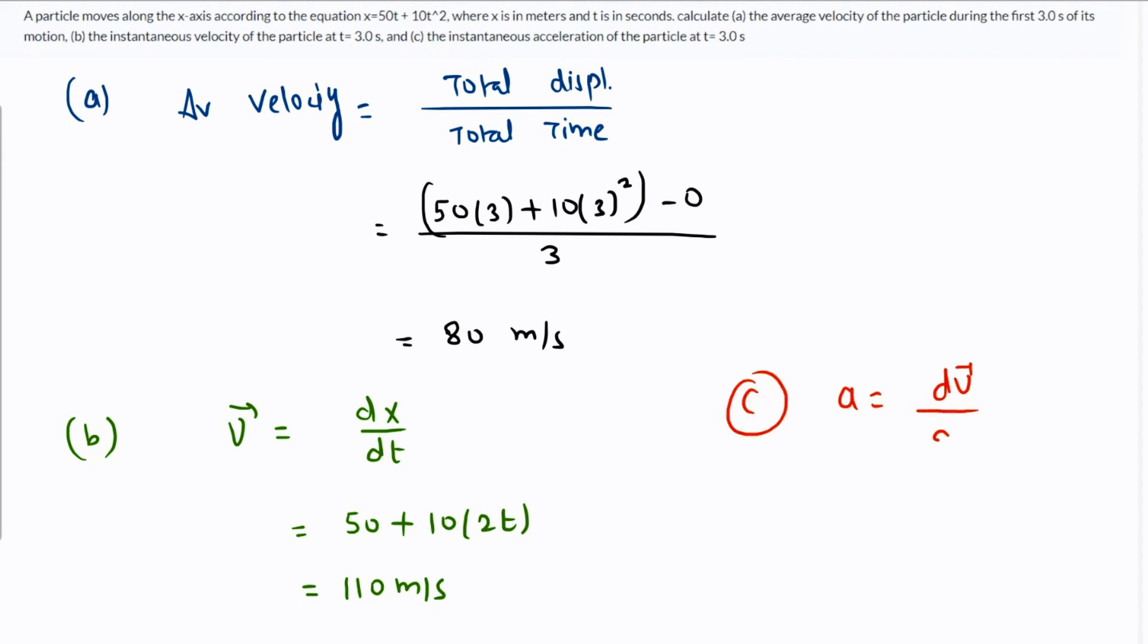Acceleration is the first derivative of the instantaneous velocity. If we differentiate 50 plus 20t, the 50 becomes 0 and we get 20, so that's 20 meters per second squared.